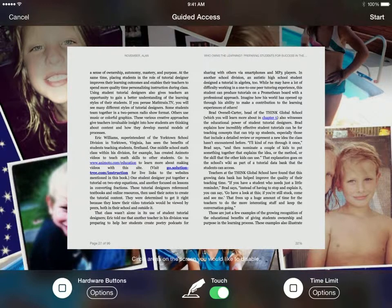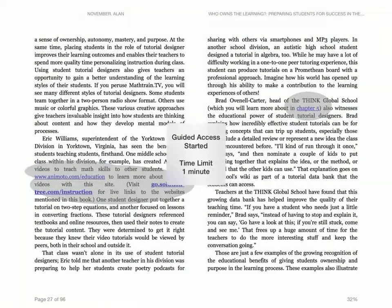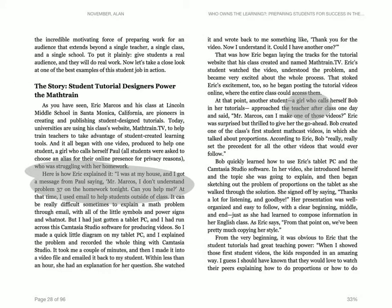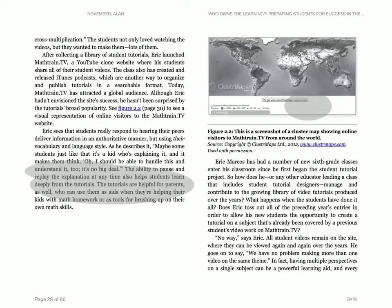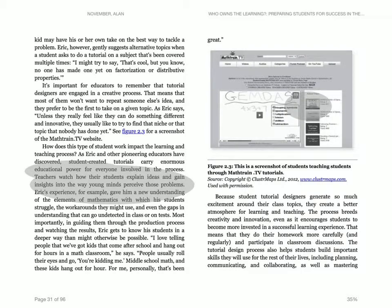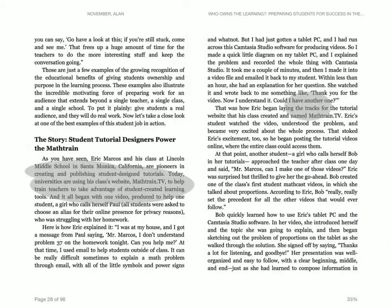You can also circle areas on the screen you'd like to disable. So if I don't want them to be able to go to links, those links will be grayed out. If I hit Start up here, they have one minute — I can turn the pages but I can't click on any of those grayed-out links.